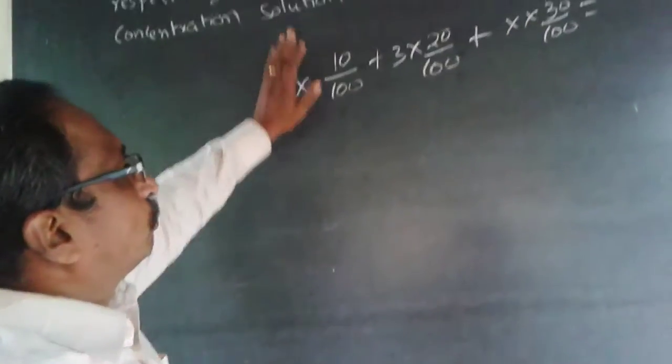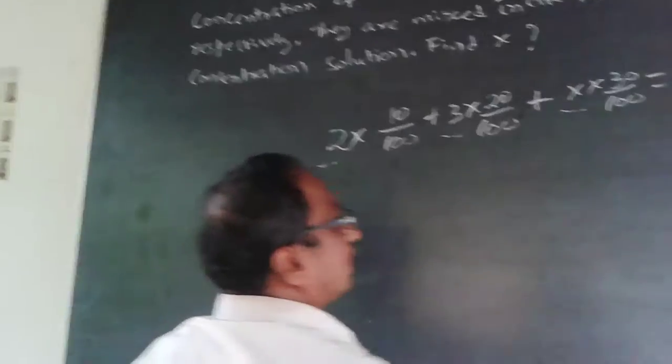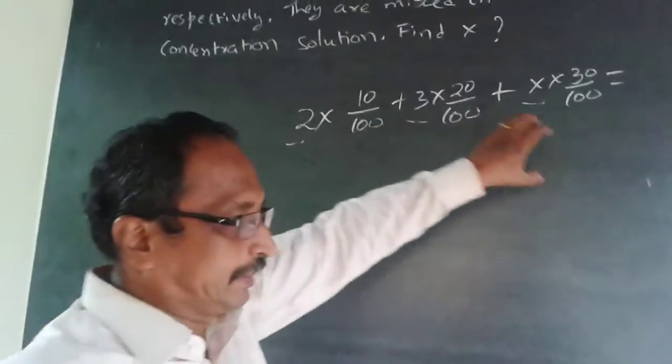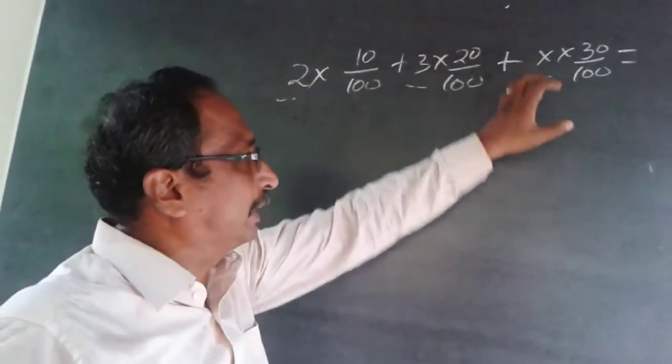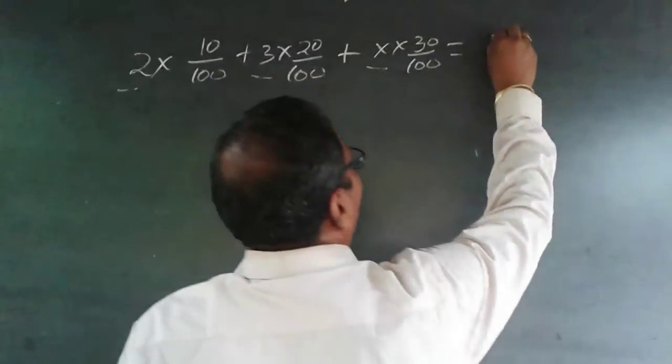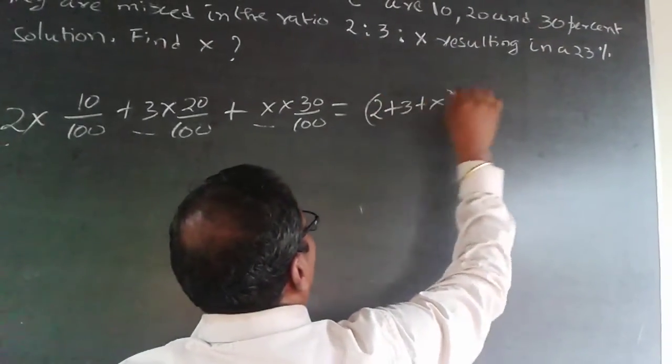Now what is happening? Resulting in 23% solution. What I have added is 2 here, 3 here, and x here. So the total quantity now will be 2+3+x. So 2 liters here, 3 liters here, and x liters here. This will be equal to (2+3+x)×23/100.